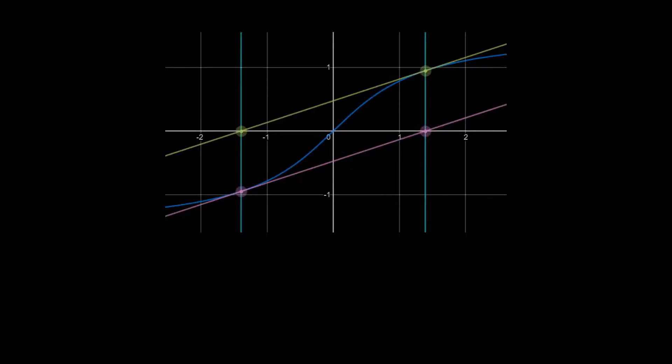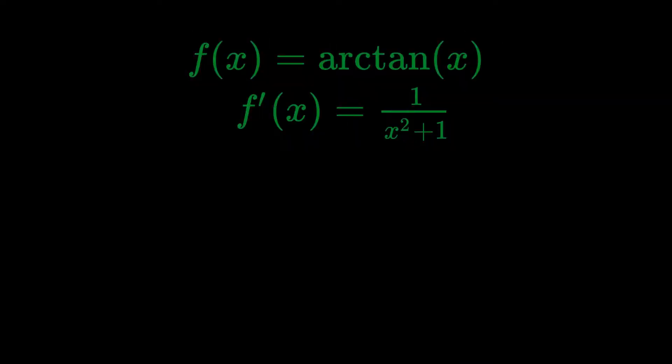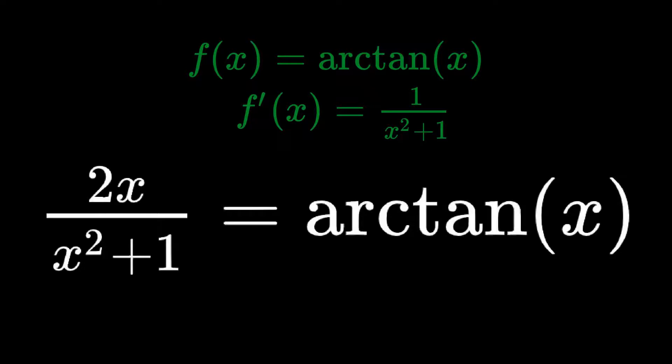In other words, we're looking for a value of x such that negative x equals x minus f of x over f prime of x. Since f of x equals arctanx, and f prime of x equals 1 over x squared plus 1, we can substitute those in to get 2x over x squared plus 1 equals arctanx.